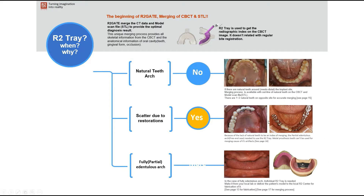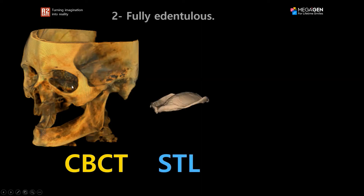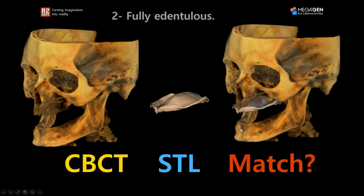What about fully edentulous cases? Can we use the standard R2 tray in these cases? The challenge in fully edentulous cases is that there is really no reference for the matching between the CBCT and the STL file or the model of the patient. The CBCT only allows us to see the bone, while the impression only shows the soft tissue. So how would we be able to match the model to the CBCT scan? That's why we need to know more about the fully edentulous protocol for the matching.